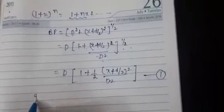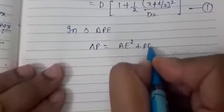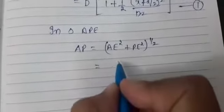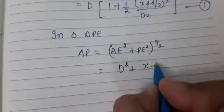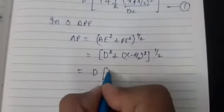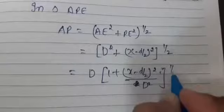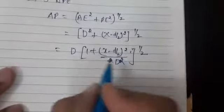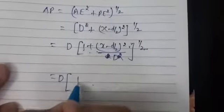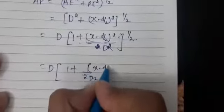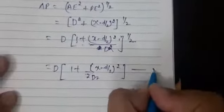Applying the same concept in triangle APE: AP squared equals AE squared plus PE squared. So AP equals the square root of D squared plus (x minus d/2) squared. Taking D common and applying the binomial expansion, AP approximately equals D plus (x minus d/2) squared divided by 2D. This is equation 2.